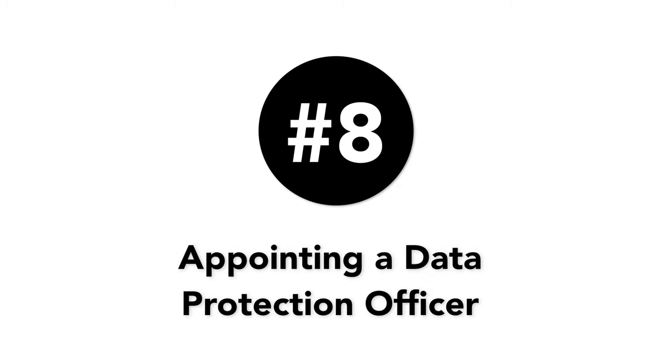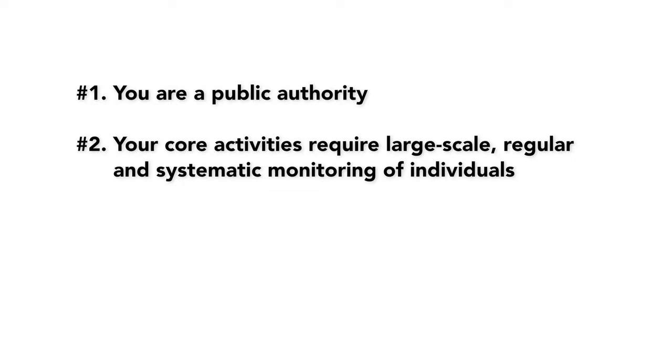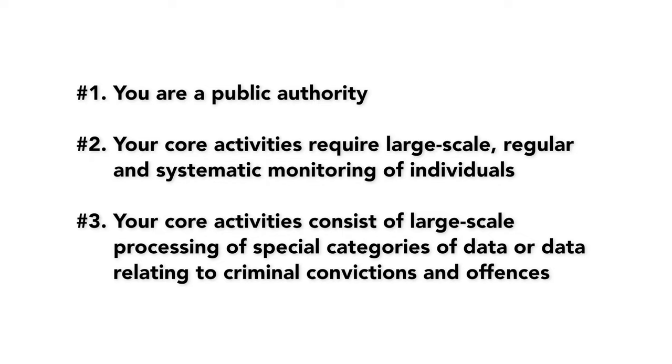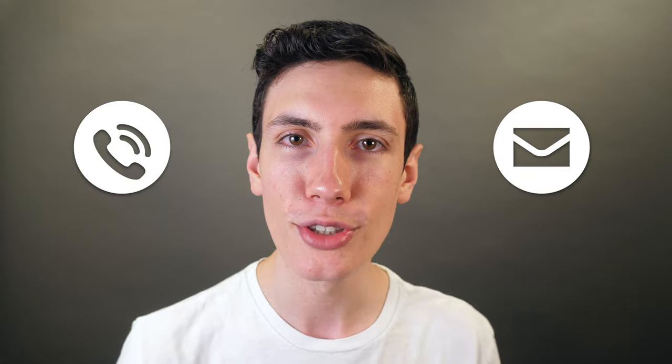Number eight is appointing a data protection officer. Your company may need to appoint a data protection officer in order to be GDPR compliant. This applies if you are a public authority, or if your core activities require large-scale, regular, and systematic monitoring of individuals such as online behavior tracking, or if your core activities consist of large-scale processing of special categories of data or data relating to criminal convictions and offenses. Assess whether your business needs a data protection officer and, if so, inform your website or mobile app users on how they can contact them.